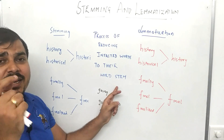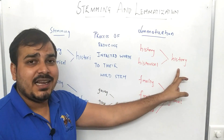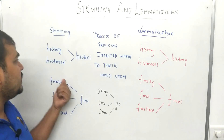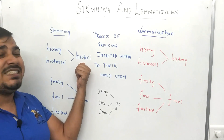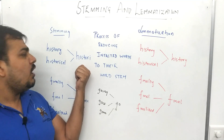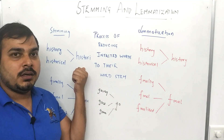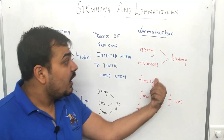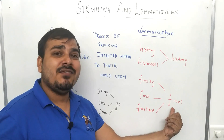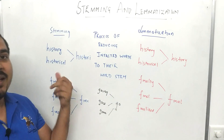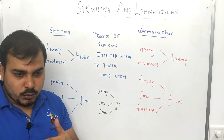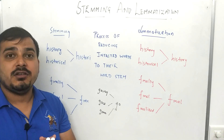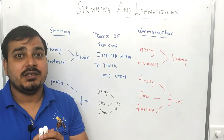Now what does lemmatization do? Lemmatization also does the same thing, but it converts the word into a meaningful word understandable by a human being. For example, 'history' and 'historical' get converted into 'history' — whereas stemming gave us 'histori' (h-i-s-t-u-r-i), which does not make sense. Similarly, 'finally,' 'final,' and 'finalized' give 'fina' with stemming, but with lemmatization we actually get 'final.' This is all possible using the NLTK library, and in upcoming lessons I'll also cover the spaCy library, which is amazing for NLP work.